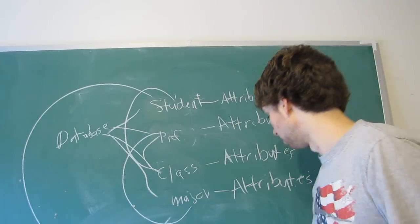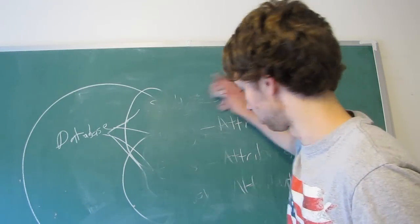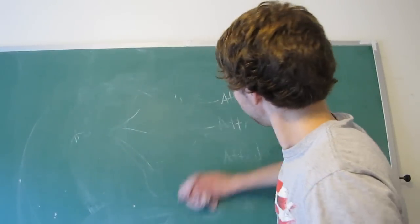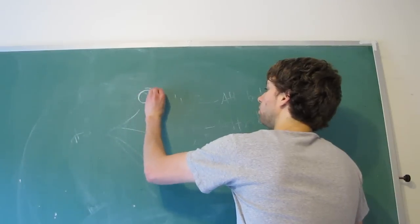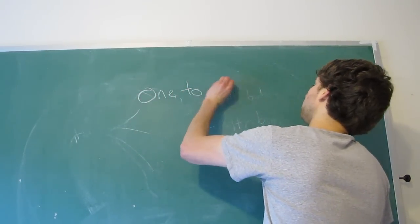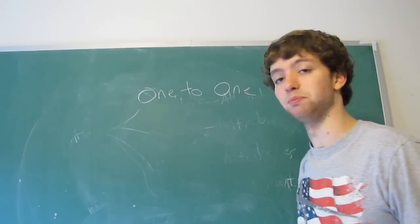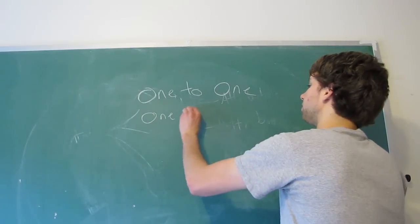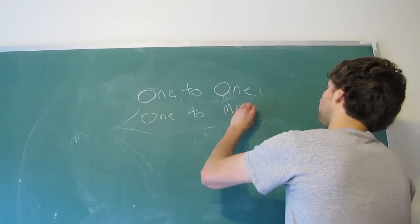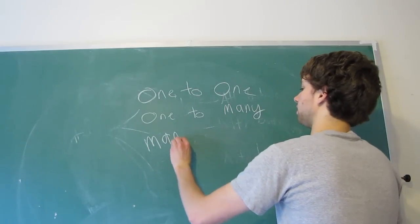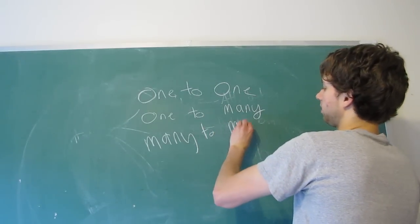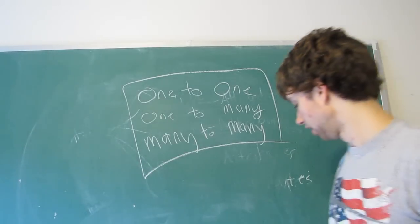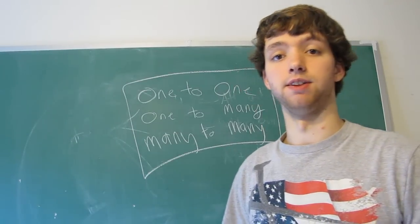The next video we'll be talking about a specific kind of relationship. So one to one, that is a type of relationship. There are two other ones: one to many, and many to many. Here are our three types of relationships, and we will be talking about each one of these individually in the next three videos.